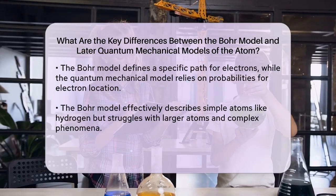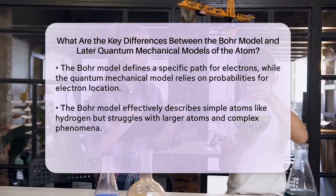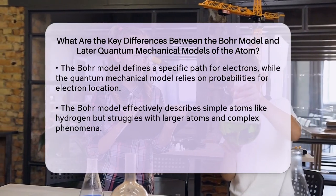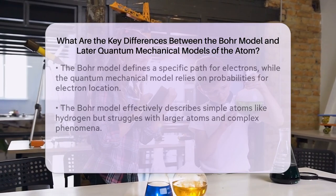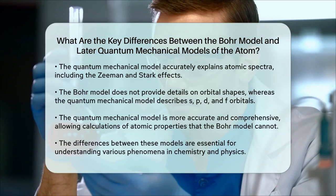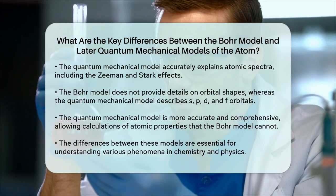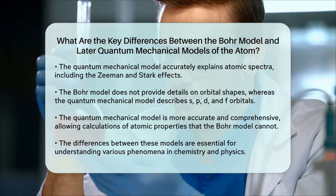In terms of orbital shapes, the Bohr model does not describe the exact shapes of every orbital, while the quantum mechanical model provides detailed descriptions of all possible orbital shapes. This includes S, P, D, and F orbitals, each with unique shapes and orientations.